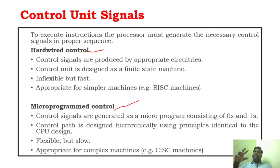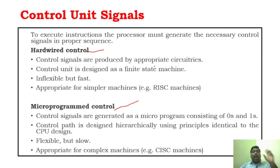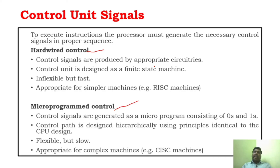Only with the control signals will the operations take place inside the processor. Hardwired Control means by using circuits — the combination elements — it will generate the control signal. That is called Hardwired Control. By using different combinational elements, it generates the control signal. Micro-Programmed Control, as the name suggests, generates control signals based upon programs — some micro-programmed, machine-level programs. That is called Micro-Programmed Control.